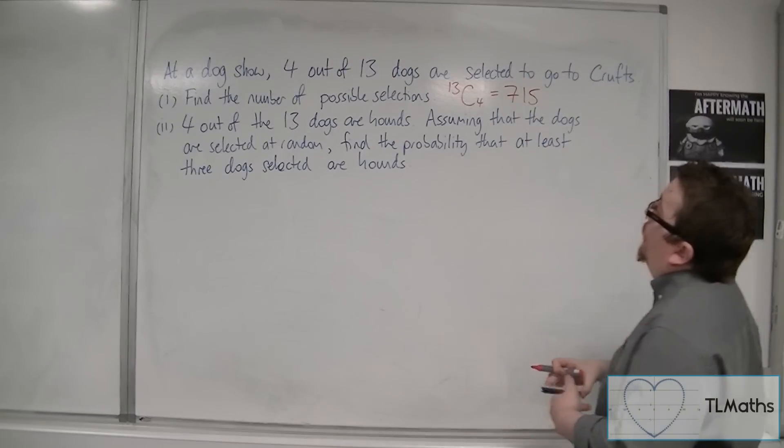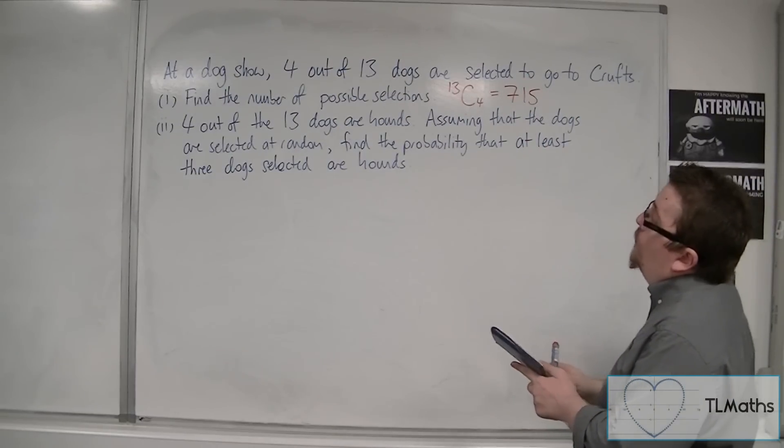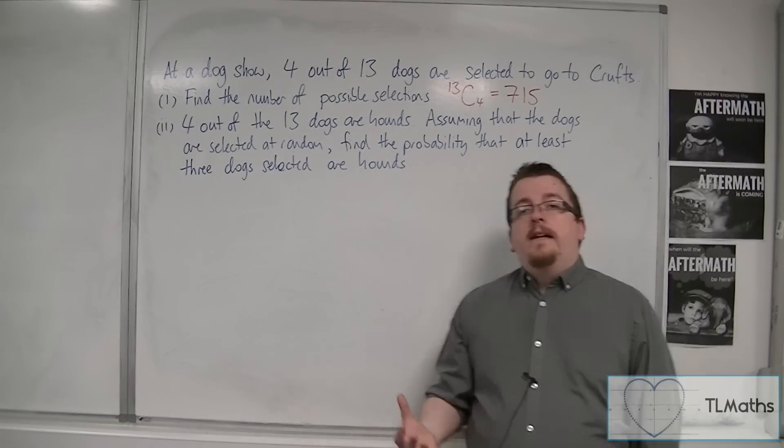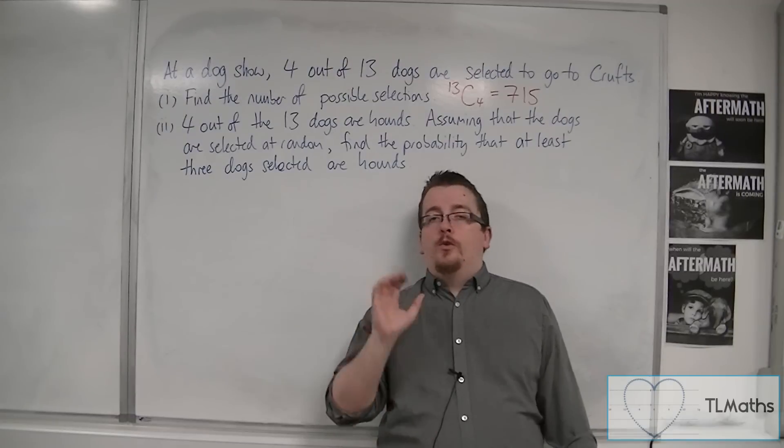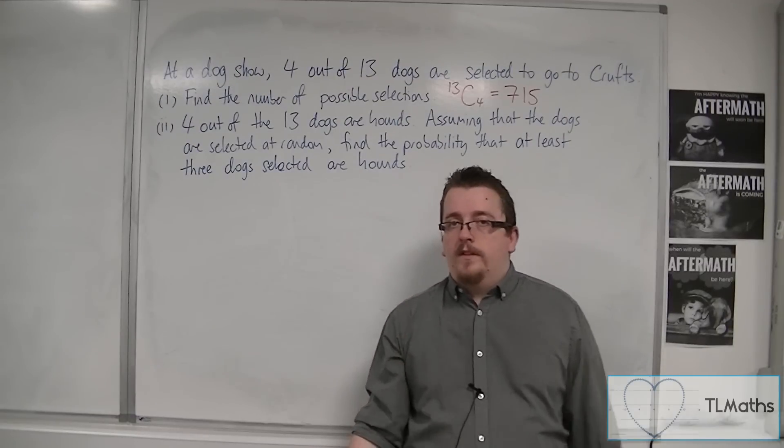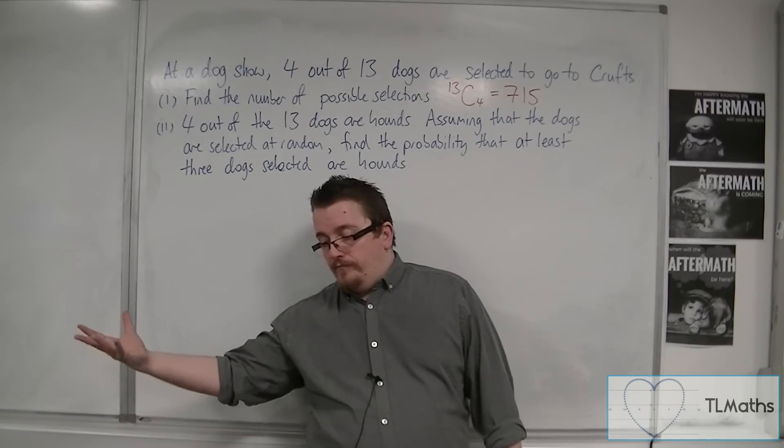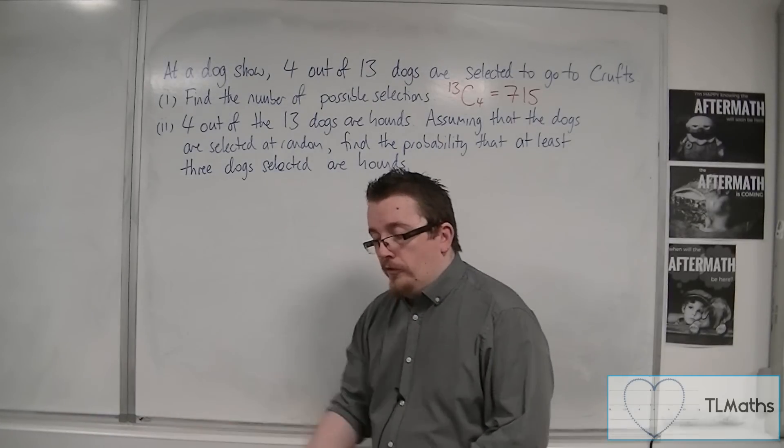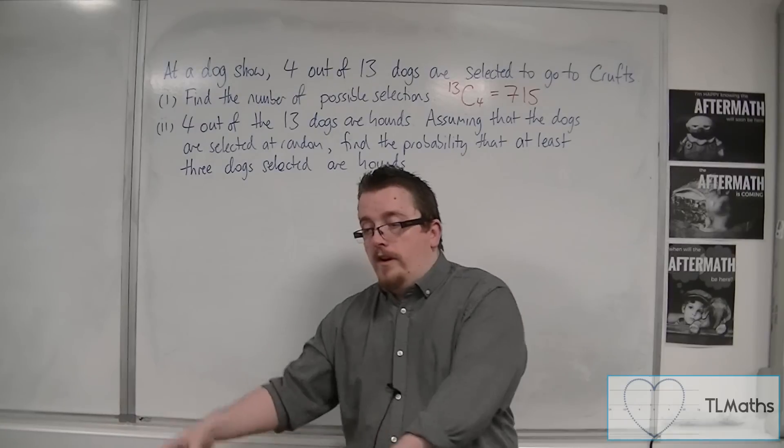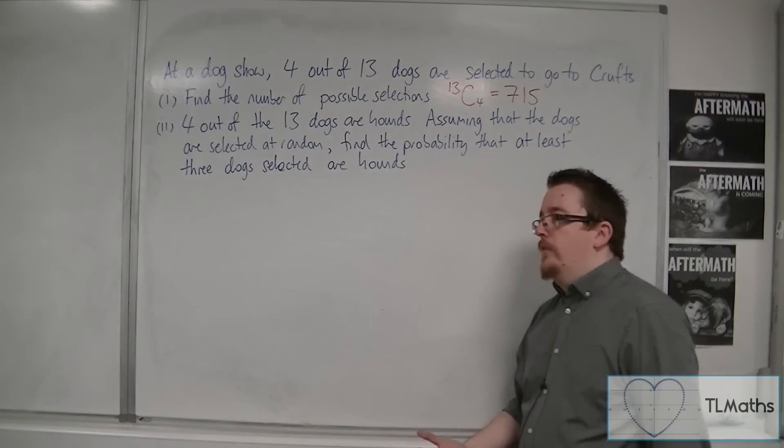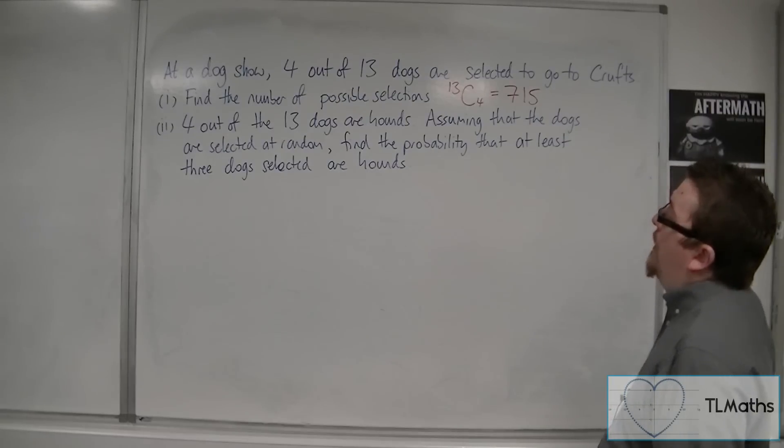So, there are 715 different ways that the 4 dogs can be selected out of 13. And this is assuming, of course, that the order doesn't matter. Because if I pick these 4 dogs, the 4 dogs have been picked. It doesn't matter in which order I actually originally picked them. All 4 of them are going to Crufts, the same level.